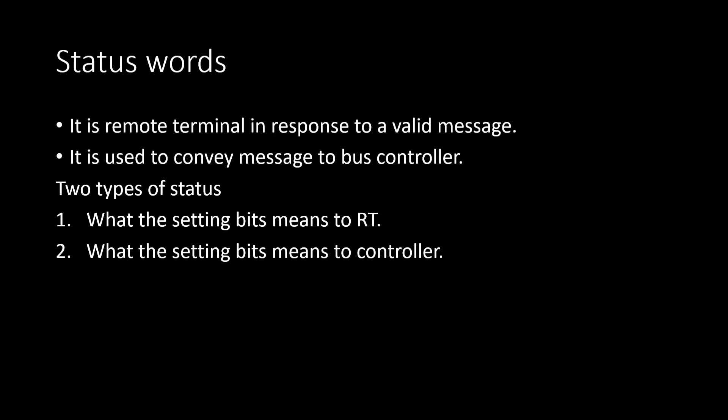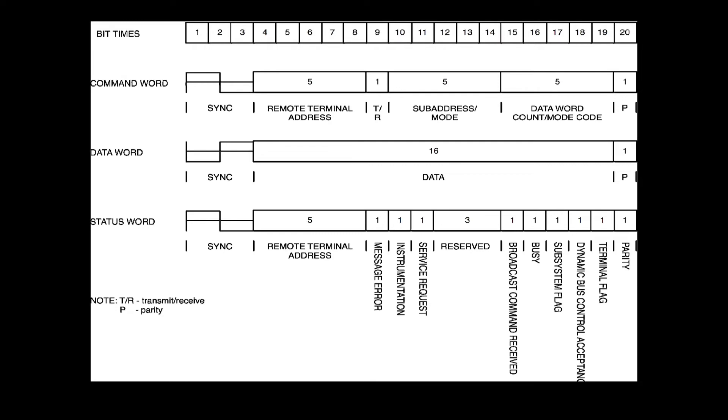What are status words? A remote terminal, in response to valid messages, will respond back — it is a type of feedback. Second, it is used to convey messages to the bus controller and through the bus controller to the bus monitor. There are two types of status: when the setting bits mean to RT, and what the setting bits mean to the controller. These are the two status types used in 1553B.